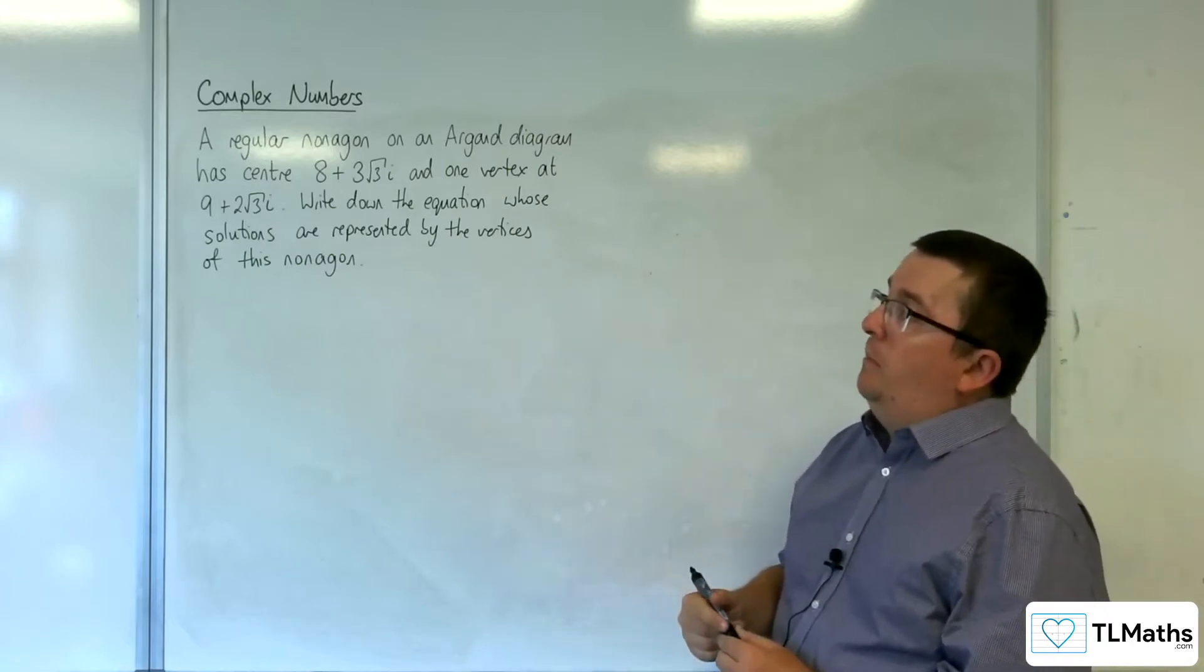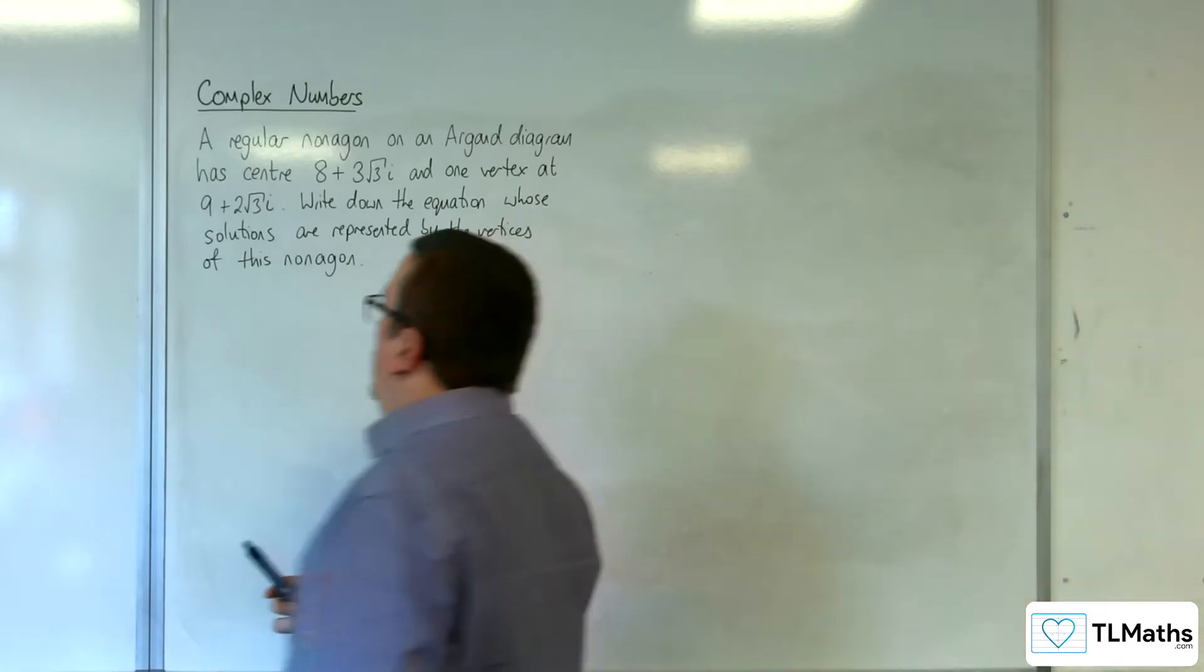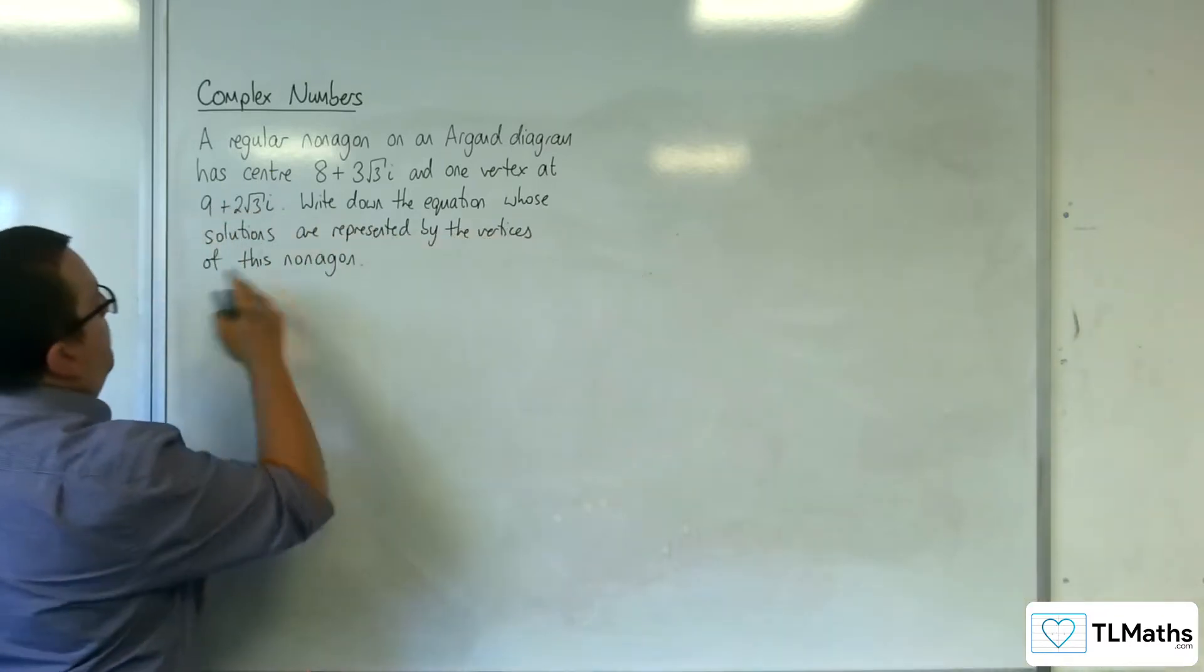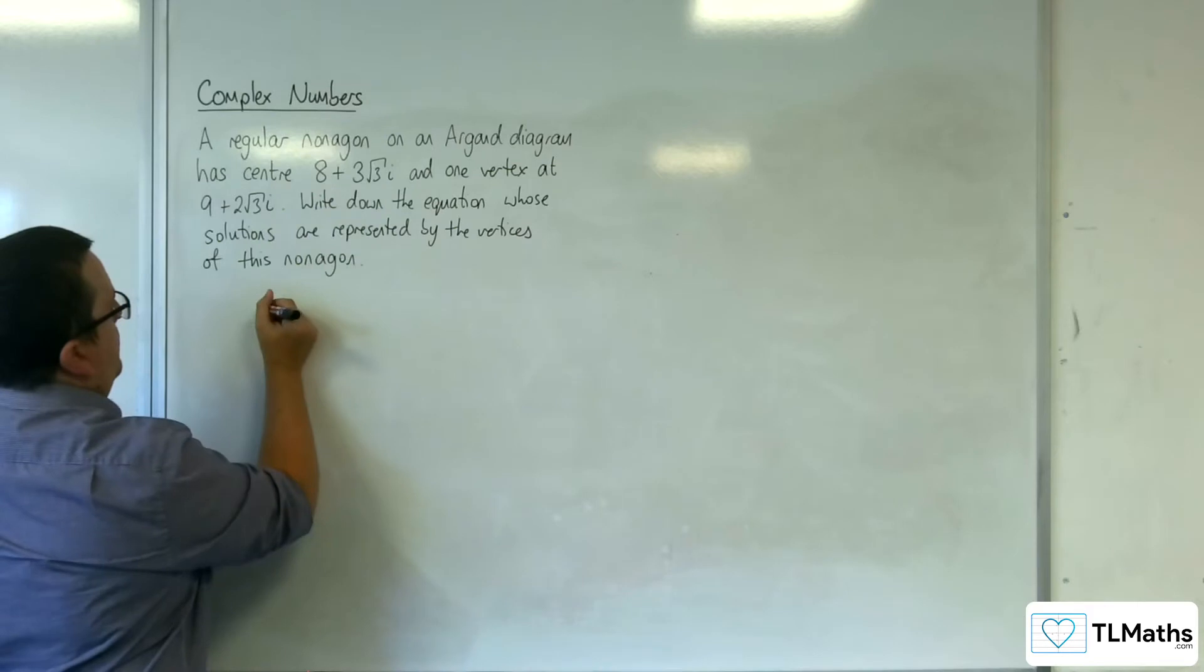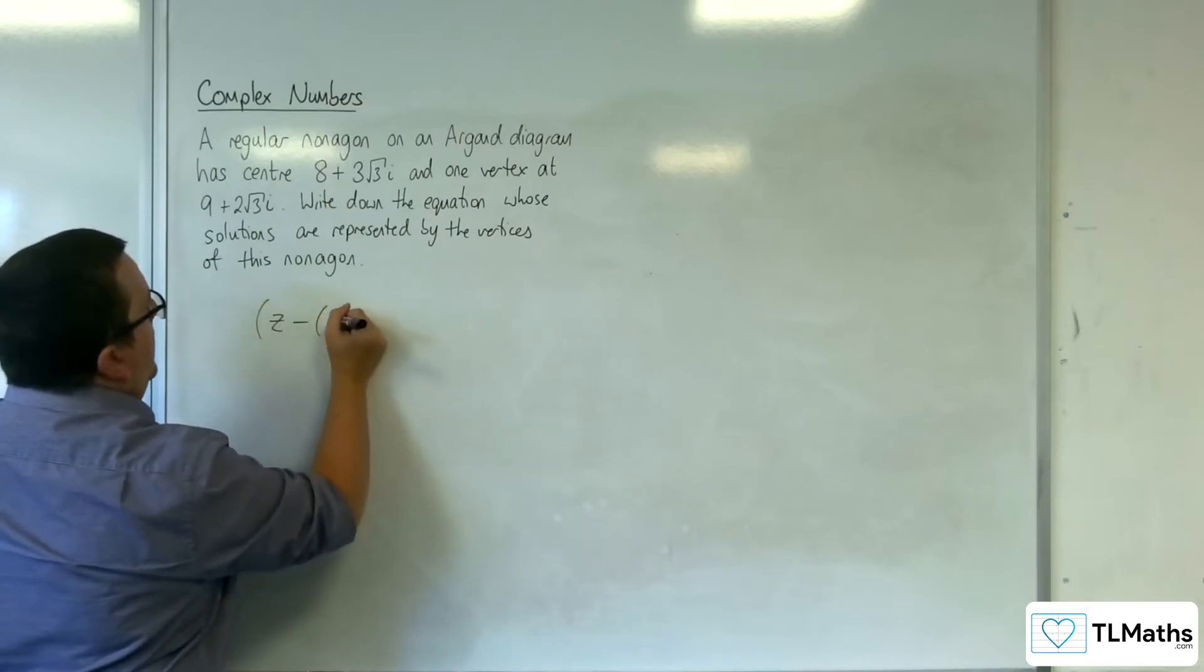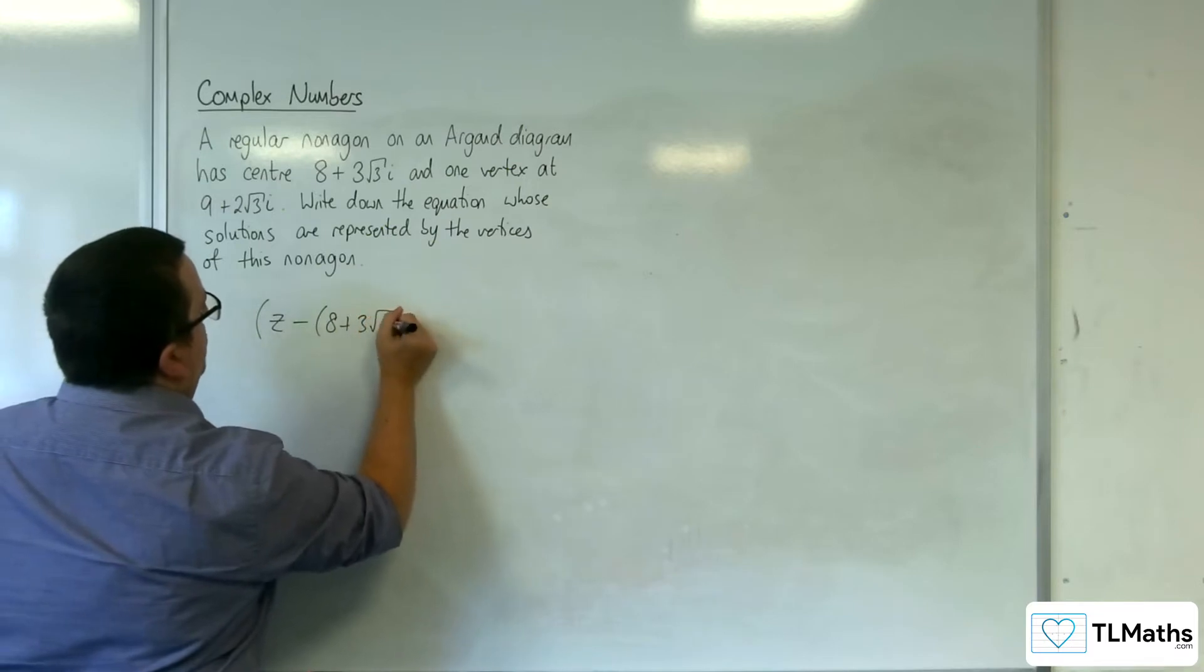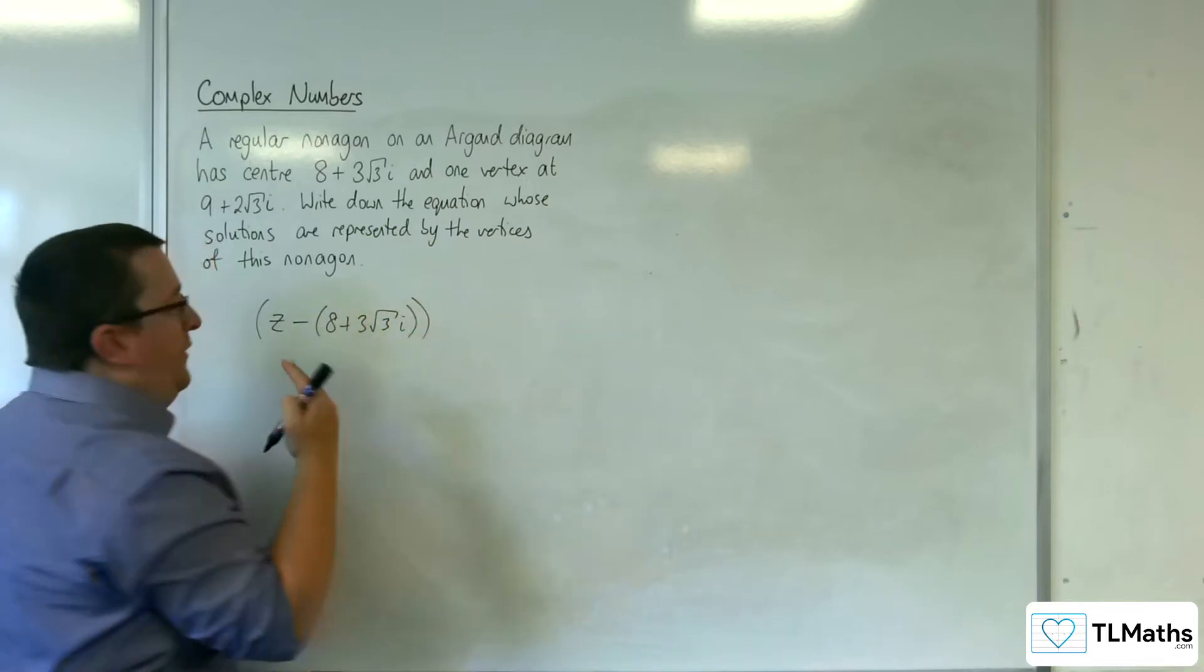So it's very similar to the problem that we had before. We can go straight in with saying, well if it's got a center at 8 + 3√3i, then it must be of the form z - (8 + 3√3i) in order to center it there.